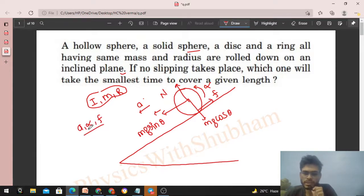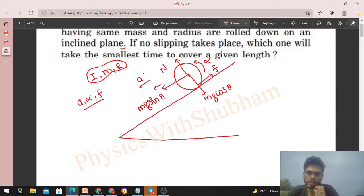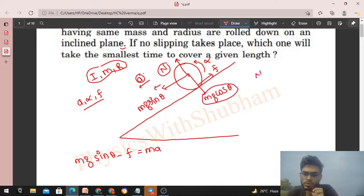First equation is simple: mg sin theta minus friction force equals mass into acceleration. Net force along the inclined plane is mass into acceleration. And normal reaction will balance mg cos theta. Normal reaction is also a variable, but you can easily find its value as mg cos theta, so we don't need normal reaction.